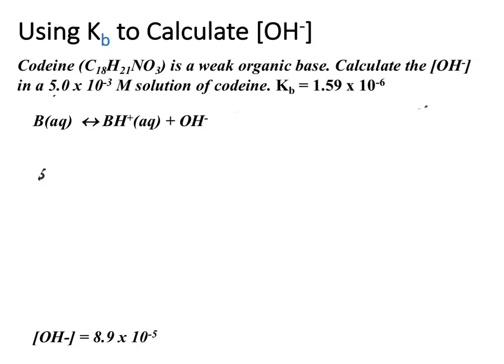This problem tells us we're using Kb to calculate our hydroxide ion concentration. Much in the same way that we would treat an ice table problem with Ka, we'll do that same process here using Kb instead. When codeine dissolves in water, it produces the conjugate acid and conjugate base.